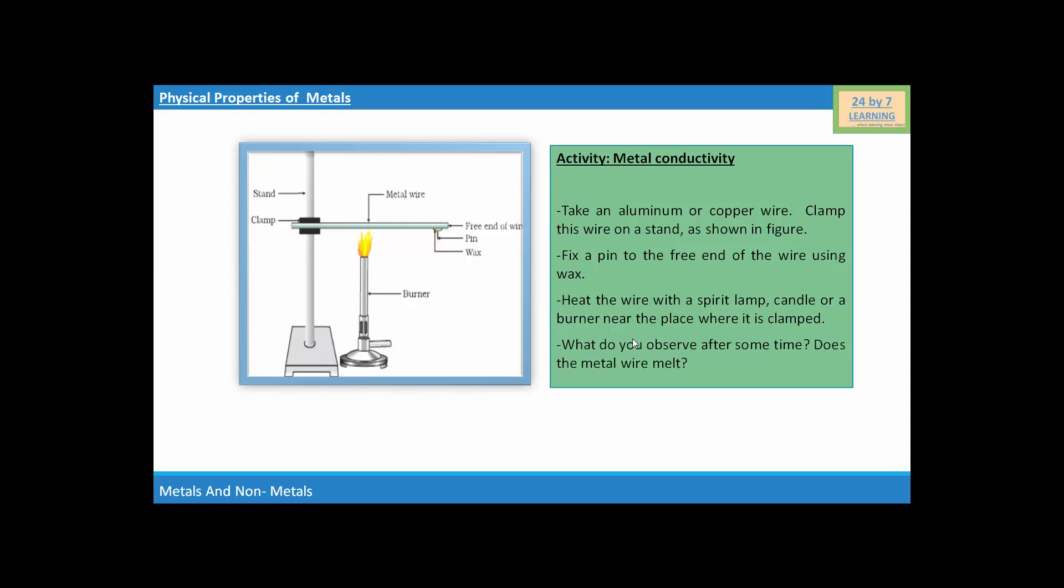So, what do you observe after some time? Does the metal wire melt? Yes, because metals are good conductors of heat. So, this activity is showing that metals are good conductors of heat and have high melting points. The best conductors of heat are silver and copper. Lead and mercury are comparatively poor conductors of heat.